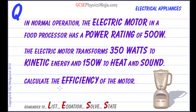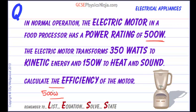A diagram for energy efficiency is always going to be a Sankey diagram, so let's put that down here. The power rating of the food processor is 500 watts, and that means we've got an input power of 500 watts. This is telling us that every second, 500 joules of energy are being transformed in the food processor.